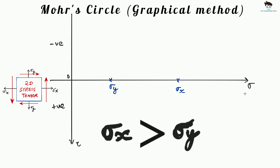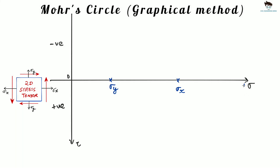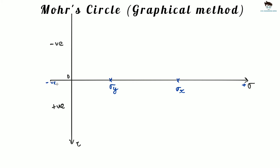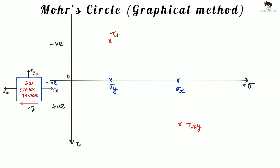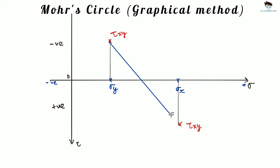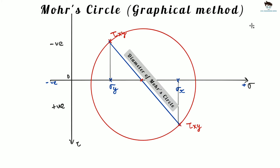Usually stresses in the x-axis are larger compared to the stresses in the y-axis. Note that sigma x and sigma y are marked on the positive side of the graph, since tensile stresses are assumed to be positive. Then the shear stress tau xy acting on the x-plane, which is likely to create a counter-clockwise rotation, is marked on the positive side of the vertical axis. Similarly, tau xy acting on the y-plane, which creates clockwise rotation, is marked on the negative side. Now join these two points, which defines the diameter of the Mohr's circle, and draw the circle.